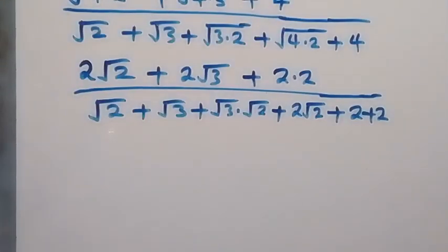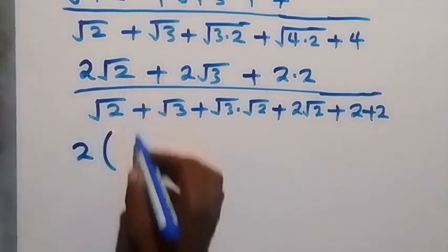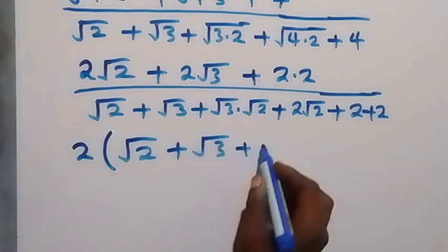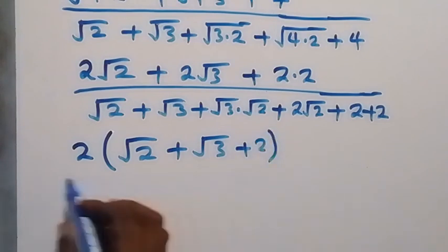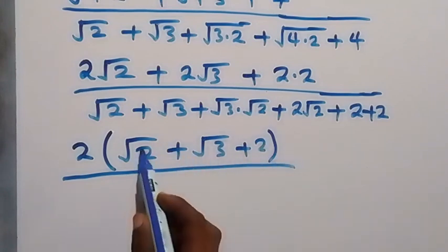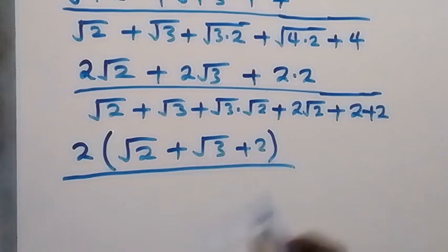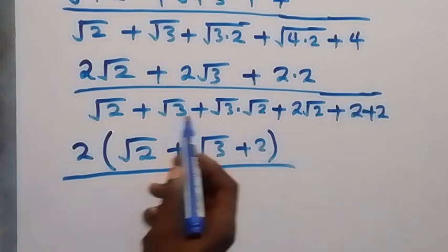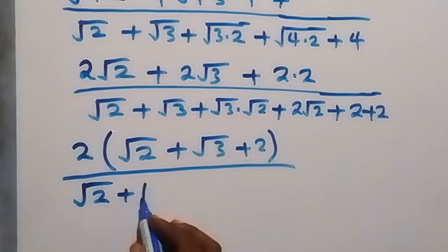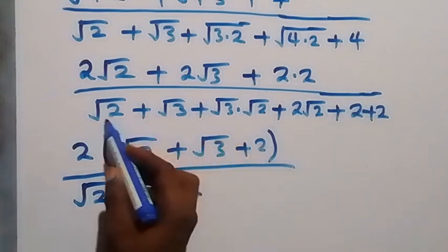In the numerator we have 2 common, so we factor it out. What remains inside the bracket is root 2 plus root 2 plus root 3 plus 2, divided by the denominator. In the denominator we can identify root 2 plus root 3 plus 2 as a common grouping. We take one of these together with the others, so we have root 2 plus root 2 plus root 3 plus 2.